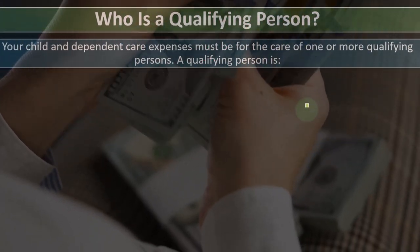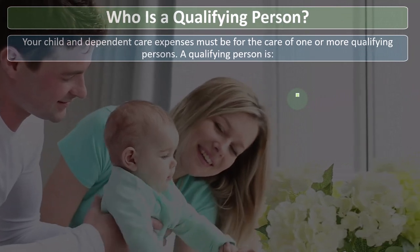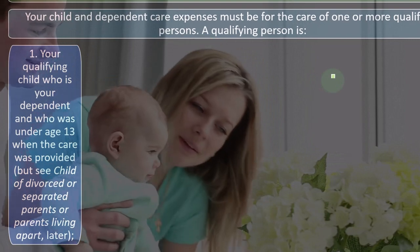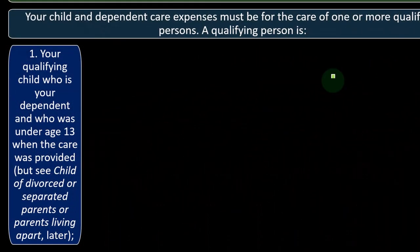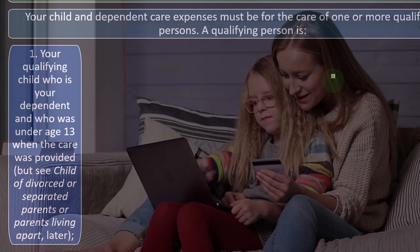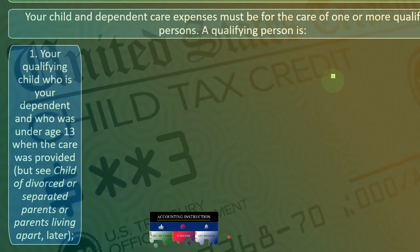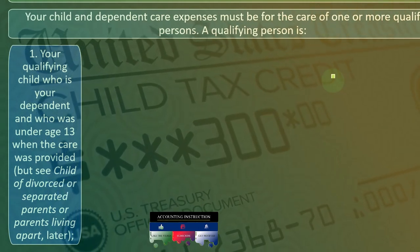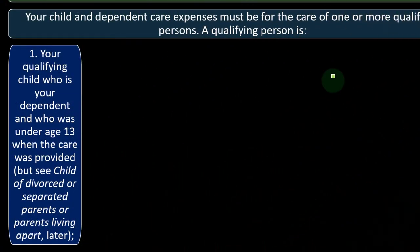Who is a qualifying person? Your child and dependent care expenses must be for the care of one or more qualifying persons. A qualifying person includes: first, your qualifying child who is your dependent and who was under age 13 when the care was provided. Notice the different age thresholds — the Child Tax Credit has a threshold of 17, and the Child and Dependent Care Expenses Credit uses age 13.